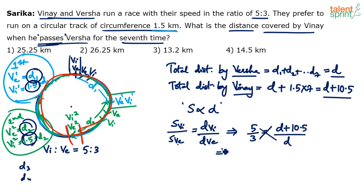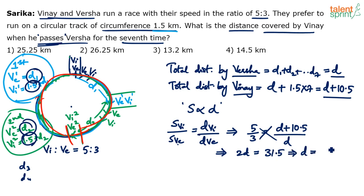Cross-multiplying: 5D = 3(D + 10.5), giving 5D − 3D = 31.5, so 2D = 31.5, which means D = 31.5 / 2 = 15.75. We have found D.